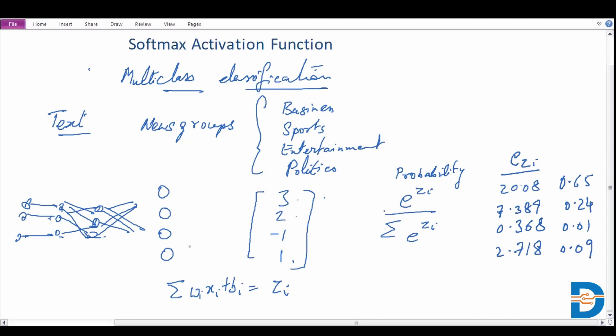In that order, when we are taking a look at our classes, these are the probabilities. Going by the maximum probability that we have, we would go for the first class which corresponds to business. Our predicted class for that particular observation or document would be the business news group.